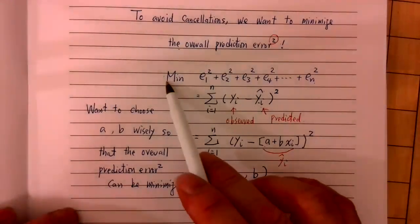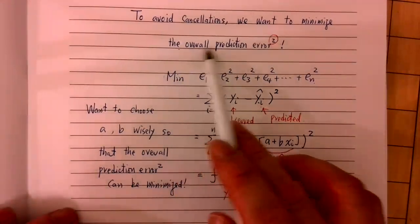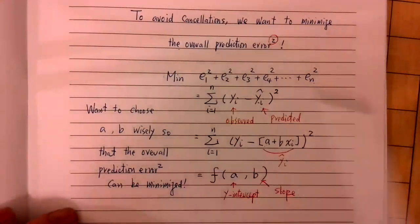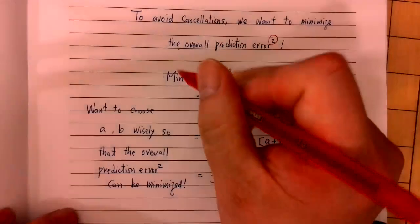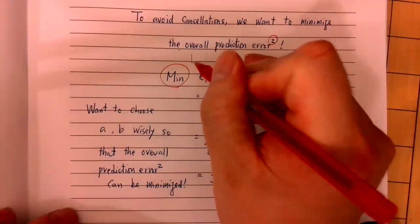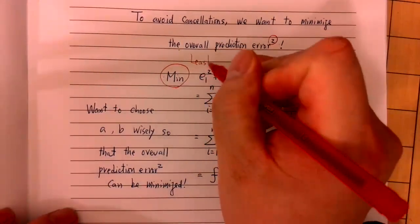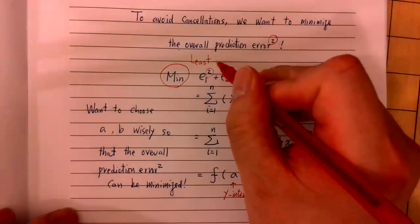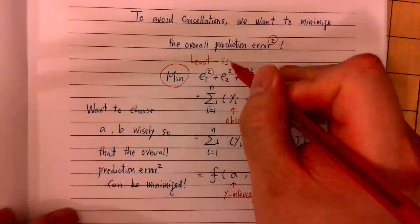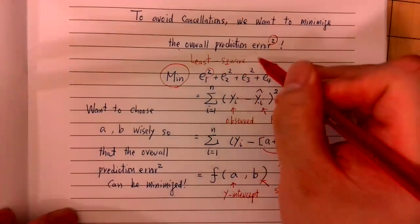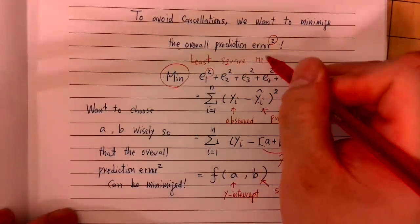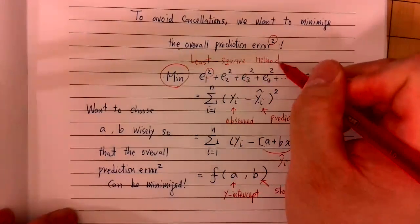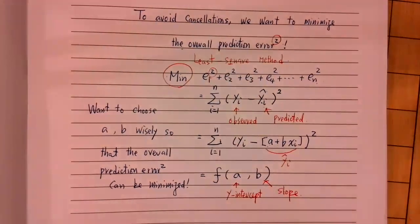We want to minimize the overall prediction error squared. This is what we call the least squares approach, or least square method. We use this idea to find the best prediction line, which is called a least square regression line.